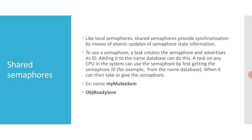Like local semaphores, shared semaphores provide synchronization by means of atomic updates of semaphore state information. Shared semaphores can be given and taken by the tasks executing on a CPU with access to the shared memory. They can be used for either synchronization of tasks running on different CPUs or mutual exclusion for shared resources.